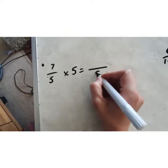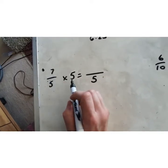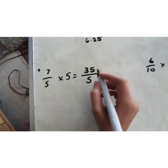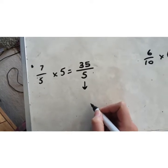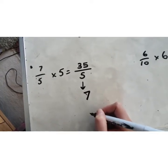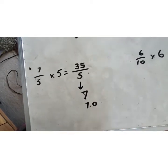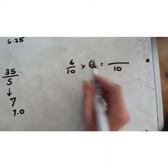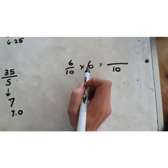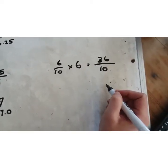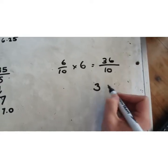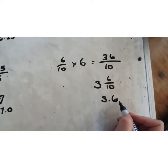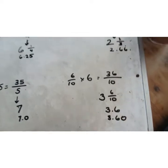Seven fifths times five: the denominator stays the same. Seven times five is 35, giving 35 fifths. As a mixed number, 35 divided by five is seven — no remainder. The last question is six tenths times six: denominator stays the same, numerator multiplied by six gives 36 tenths. As a mixed number that's three and six tenths, or 3.6.